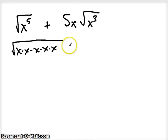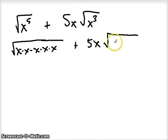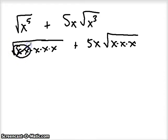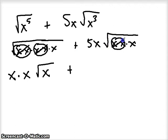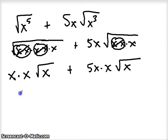Since we're taking square roots, I want to take out pairs. Circle that pair, cross it off, write one on the outside. Circle this pair, cross it off, write one on the outside — I multiply things taken out of radicals — and I'm left with an x under the radical. So the first term simplifies to x squared times the square root of x. For the second term, circle a pair and take it out: on the outside I have five x times x, which is five x squared, and I still have an x under the radical.